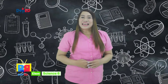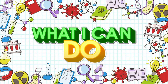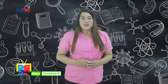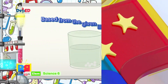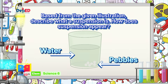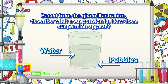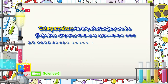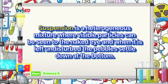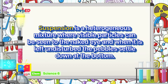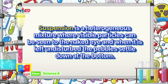Now, let's go to 'What I Can Do.' Answer the following questions. Write your answers on your paper. Based on the given illustration, describe what a suspension is. How does suspension appear? Suspension is a heterogeneous mixture where visible particles can be seen to the naked eye, and when it is left undisturbed, the pebbles settle down at the bottom.